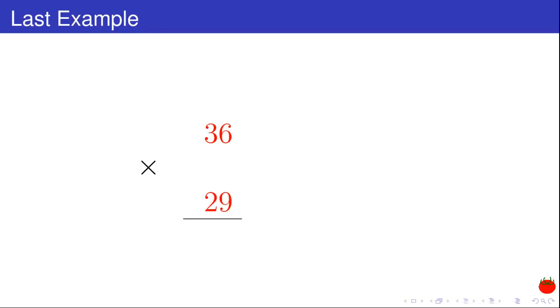In this last example, I show you that the trick works well with a negative offset too. I try to multiply 36 with 29. I add 1 to 29 to round it to 30. So I subtract 1 from 36 and I get 35. As you see, my offset is now minus 1. And I remember 36.